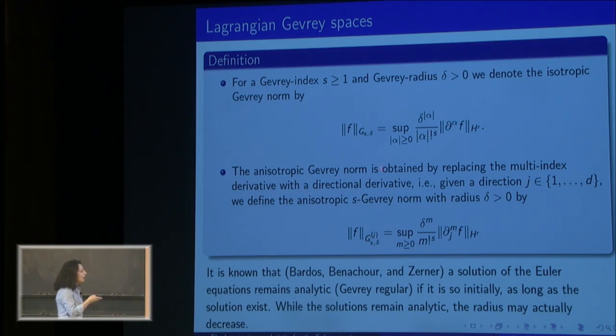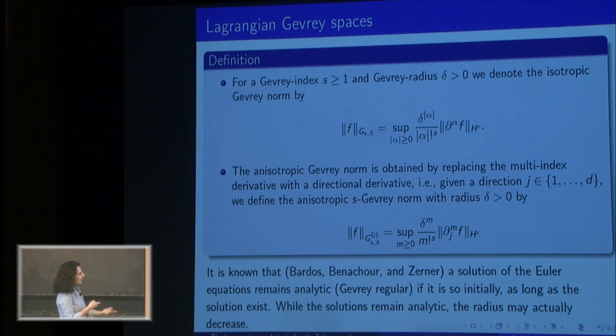For our functions F, for the isotropic case—and the same is true for Gevrey regularity as well—if we start with Gevrey regular initial data, solutions stay Gevrey regular. The Gevrey regularity, I'm going to be defining everything in terms of Gevrey regularity here. Given our functions F, for the isotropic case, we take the multi-index derivative of F, the H^r norm of our derivative, and then multiply it with this binomial coefficient, which is basically the radius δ to the power of the order of the derivative, divided by a factorial term with this power s. If this power s equals one, we have the basic analytic class. For indices s strictly greater than one, this gives us a Gevrey regularity class with index s and radius δ.